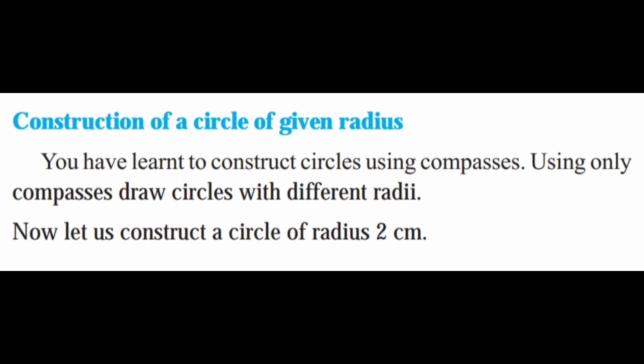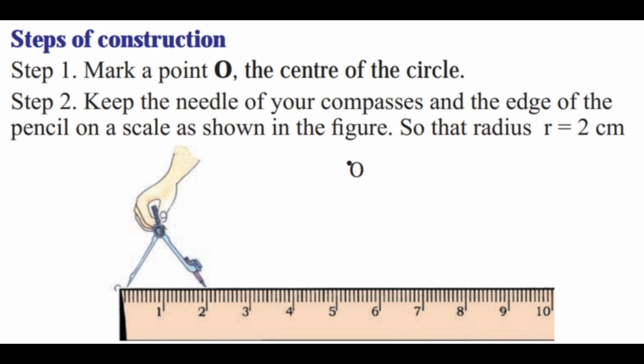Now let us construct a circle of radius 2 cm. Steps of construction. Step 1: Mark a point O, the center of the circle. Step 2: Keep the needle of your compasses and the edge of the pencil on a scale as shown in the figure, so that r is equal to 2 cm.